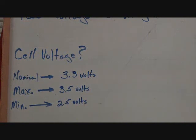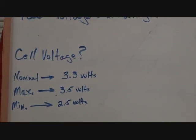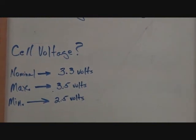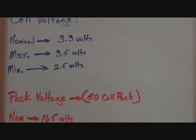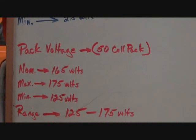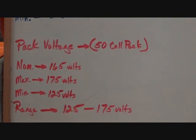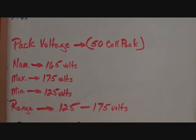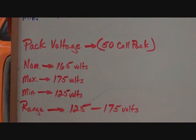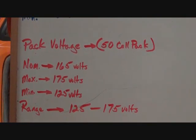If we take that and multiply that out by the number of cells, here's what it looks like on a 50 cell pack. We'd have a nominal 165 volts, but we'd have a maximum of 175 volts and a minimum of 125 volts.